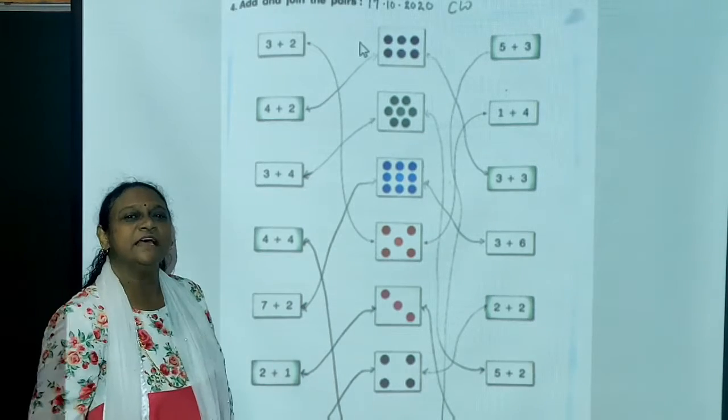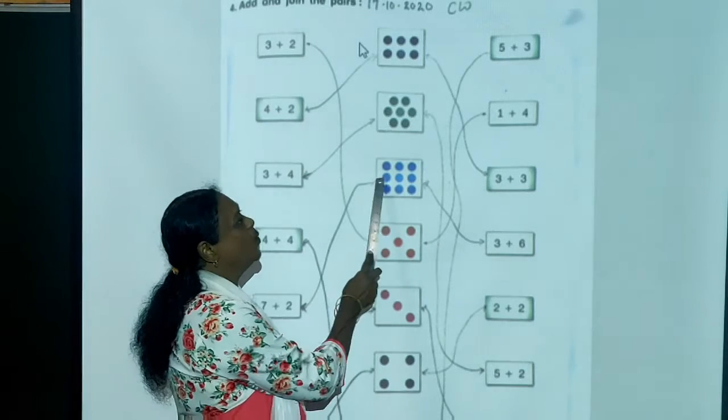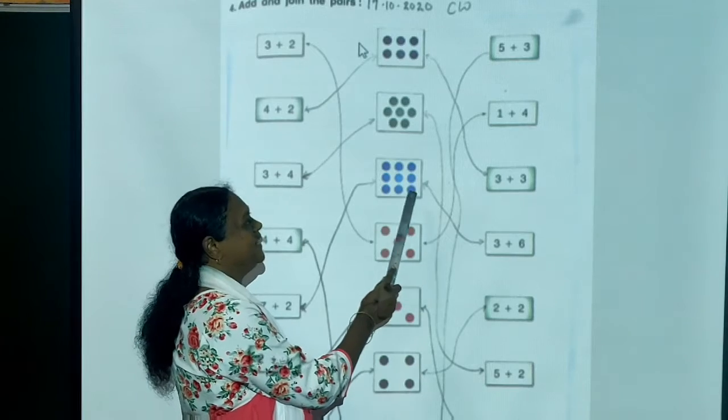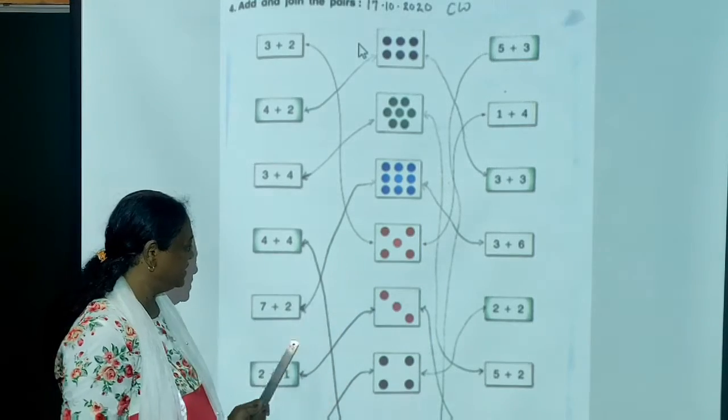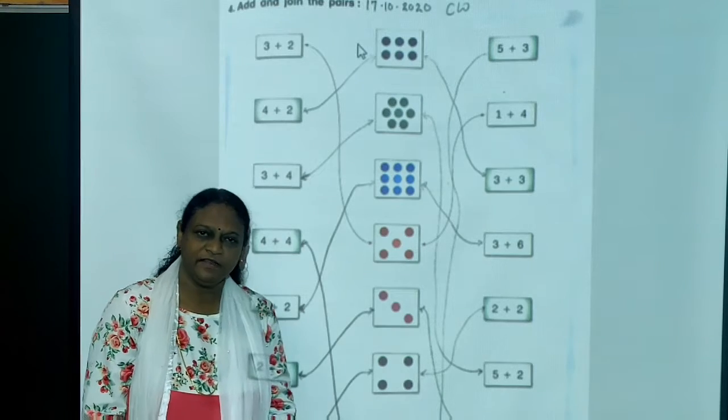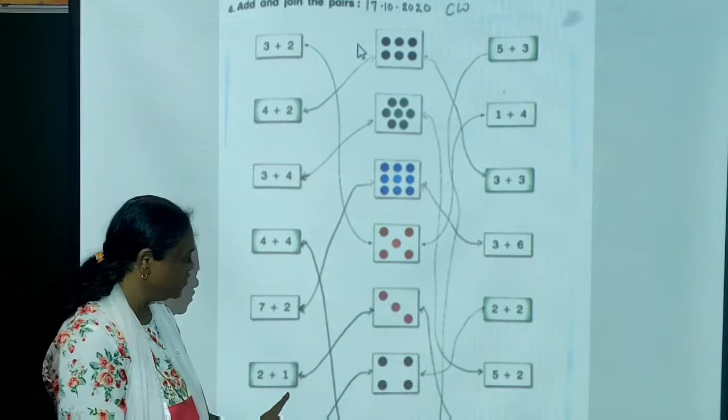Now, 7 plus 2. 7 plus 2 is 9. Now, where is 9? Counting 1, 2, 3, 4, 5, 6, 7, 8, 9. Match from here till here. Now, here it is 2 plus 1. 2 plus 1 is what children? 3. Correct. Count 1, 2, 3. So you have to match.